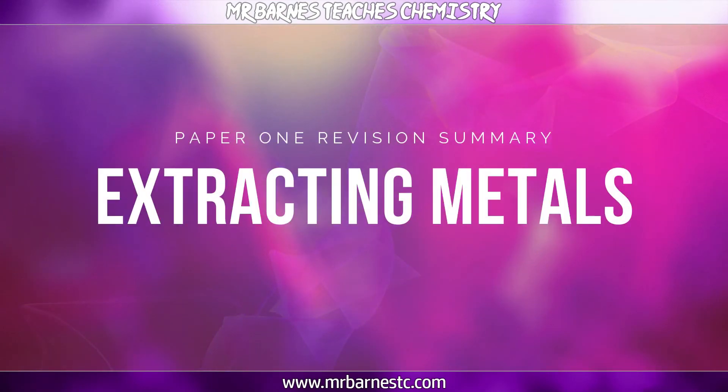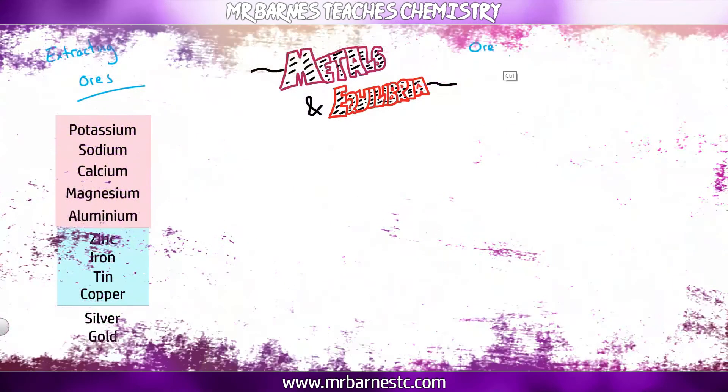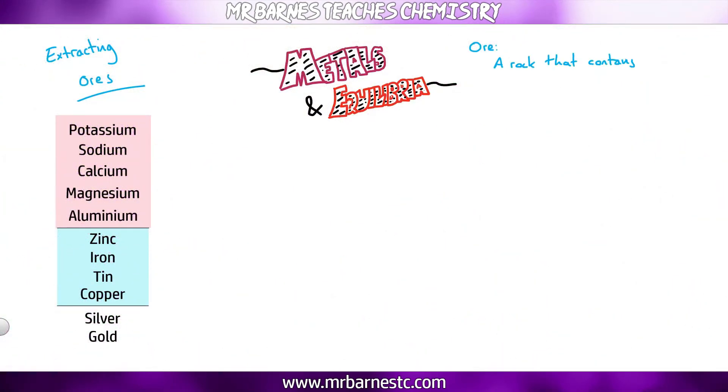Next section, extracting ores. So what are ores and how can we extract metals from them? Simply, an ore is a rock that contains enough metal to make a profit when you extract it. You've got two types of ore: high grade which means you'll get lots of profit, and low grade you'll get little if any profit.